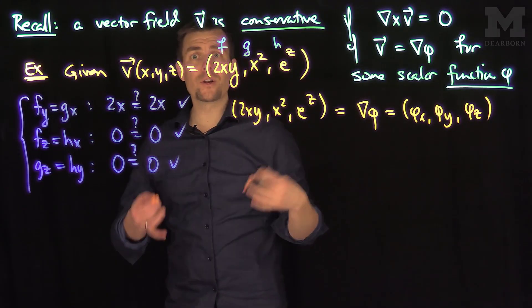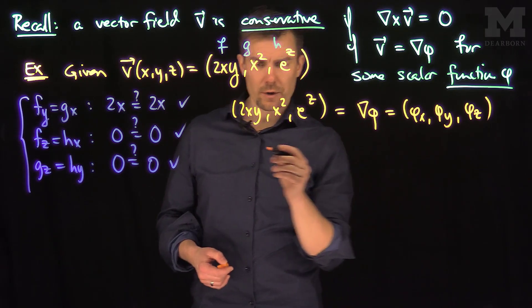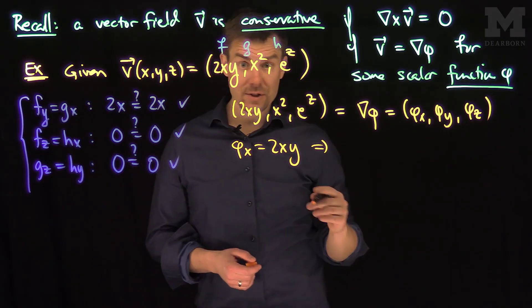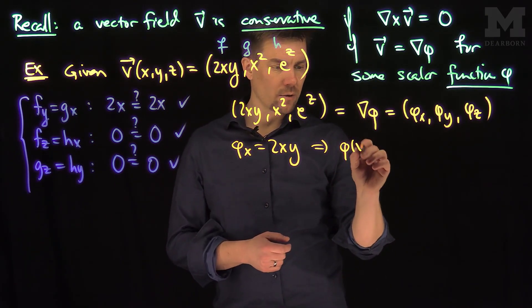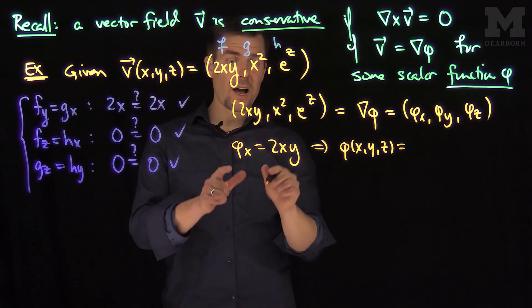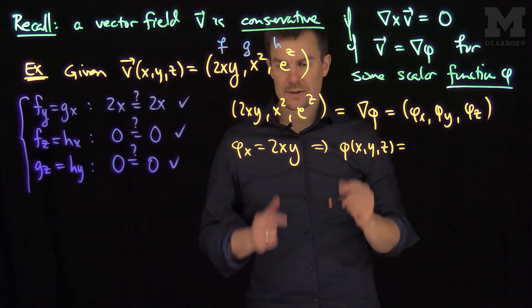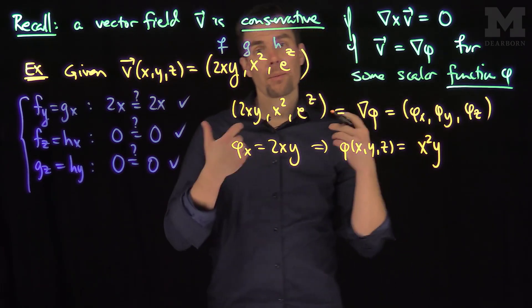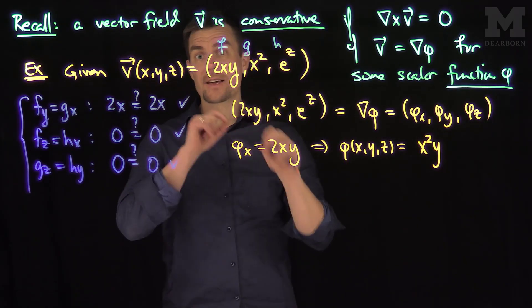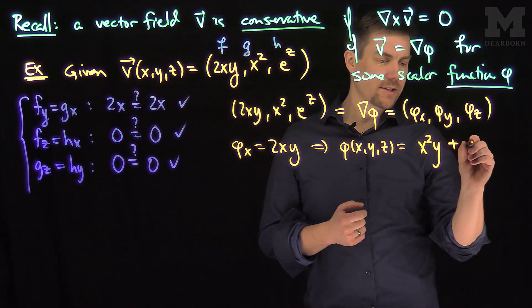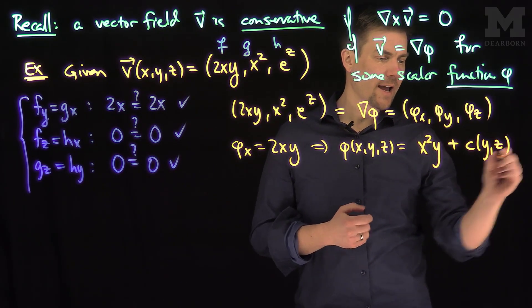So let's take any one of the equations and integrate it. I'm going to do a partial integral, so that tells me that phi X is equal to 2XY. If I do a partial X integral, I'm going to integrate 2XY with respect to X. That will give me X squared Y plus a constant. And the constant in this problem since I'm doing an X integral are Y and Z. So my constant is actually a function of Y and Z.